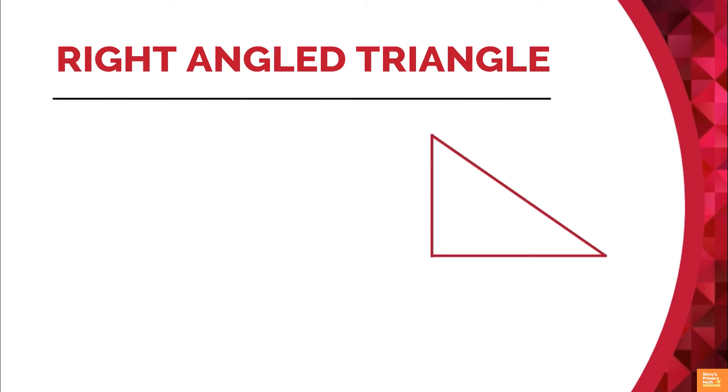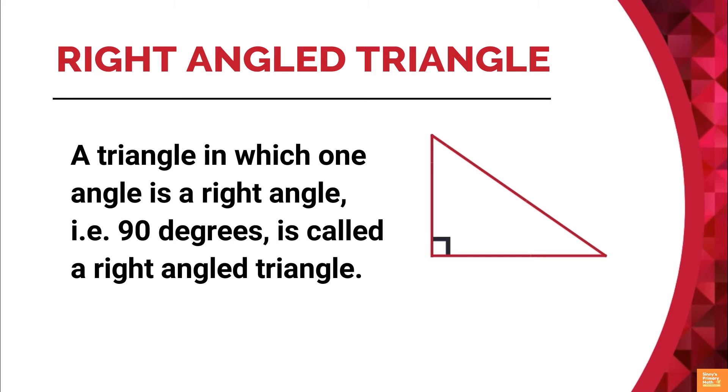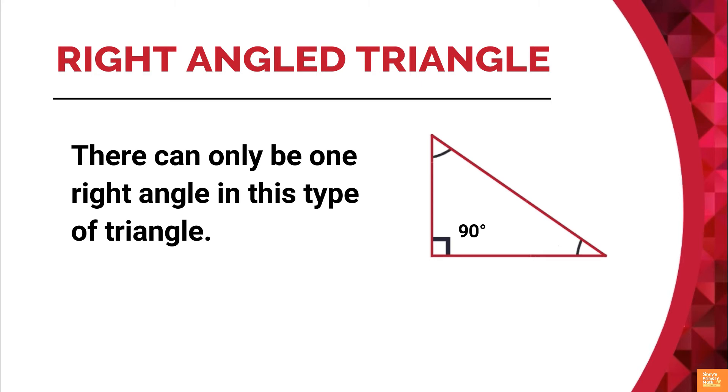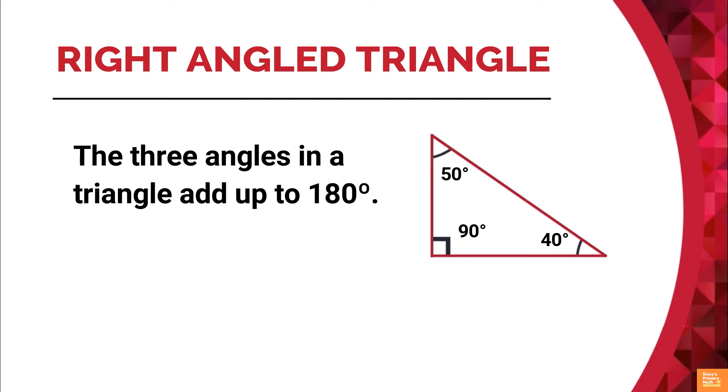Right angle triangle is a triangle in which one angle is a right angle, that is 90 degrees. It is called a right angle triangle. There can only be one right angle in this type of triangle. Since the three angles in a triangle add up to 180 degrees, therefore the other two angles are acute and both add up to 90 degrees.